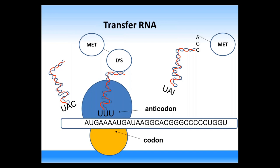The base on the tRNA that enables wobble is often inosine, represented by the letter I, which can bind all nucleotides. For example, for the amino acid glycine, four codons — GGU, GGC, GGA, and GGG — would all be recognized by one transfer RNA. There are a minimum of 31 transfer RNAs required to recognize all 61 codon codes.